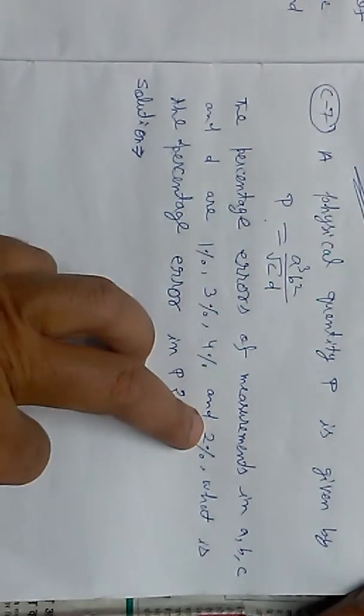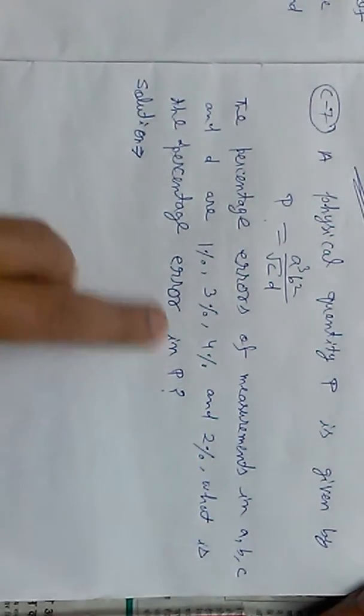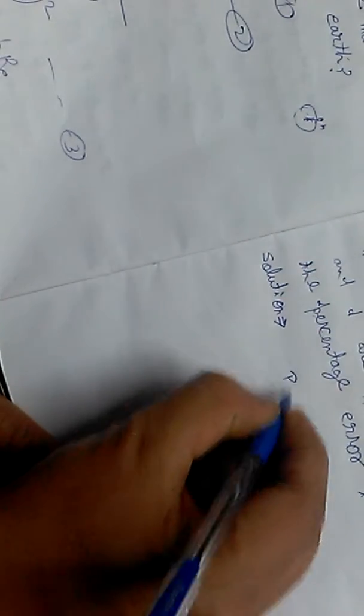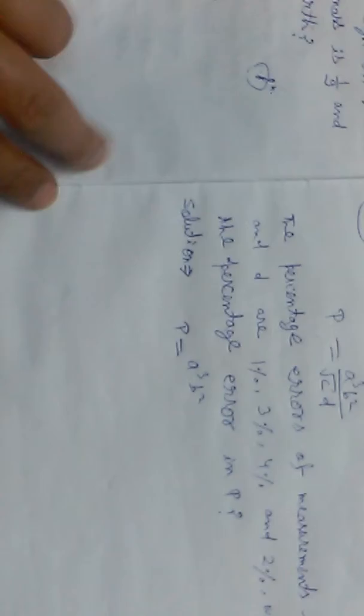The error in P depends on the errors in a, b, c, and d. The value of P is given as a cubed times b squared divided by square root of cd, where c has power one-half.